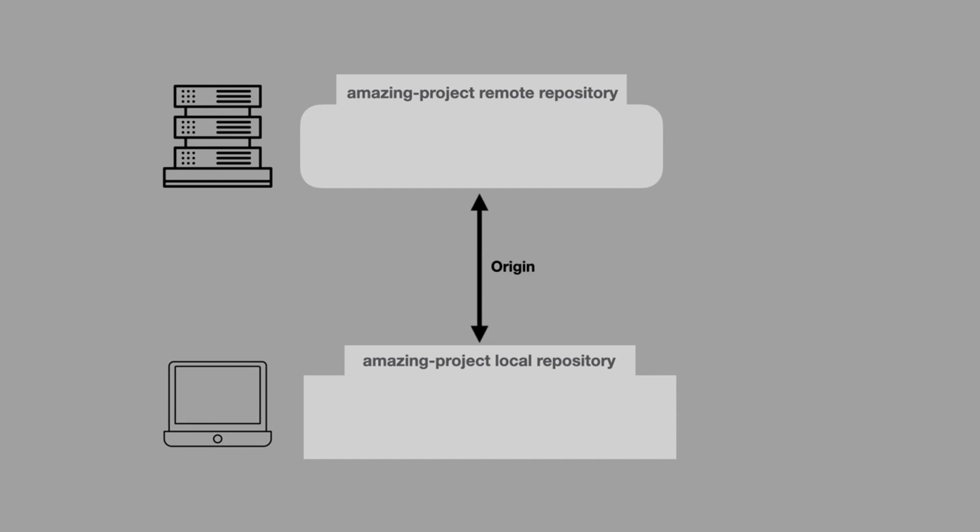So we can see that my remote repository and my local repository are linked. But this can be kind of confusing because we may think that the name for the remote repository was amazingproject. And now we also have another name for it, which is origin. So what is origin, and why does it seem that we have two names for our remote repository?